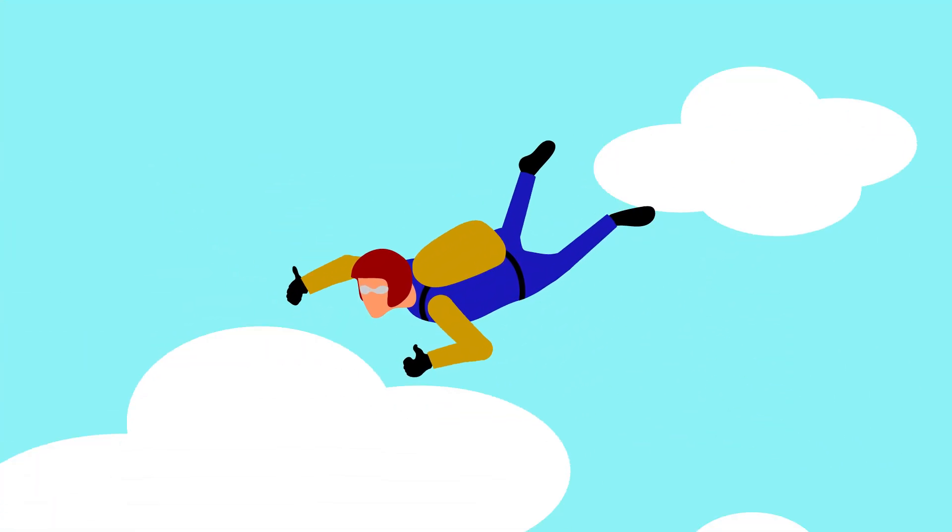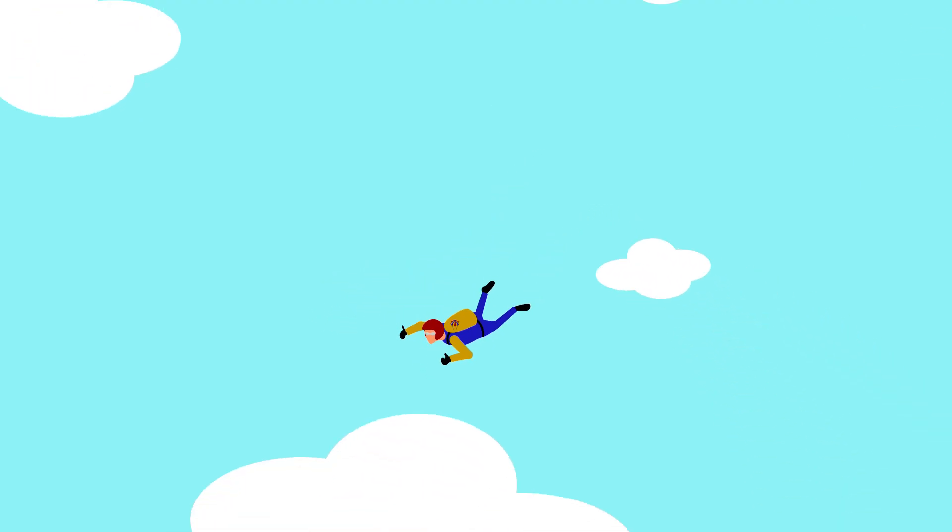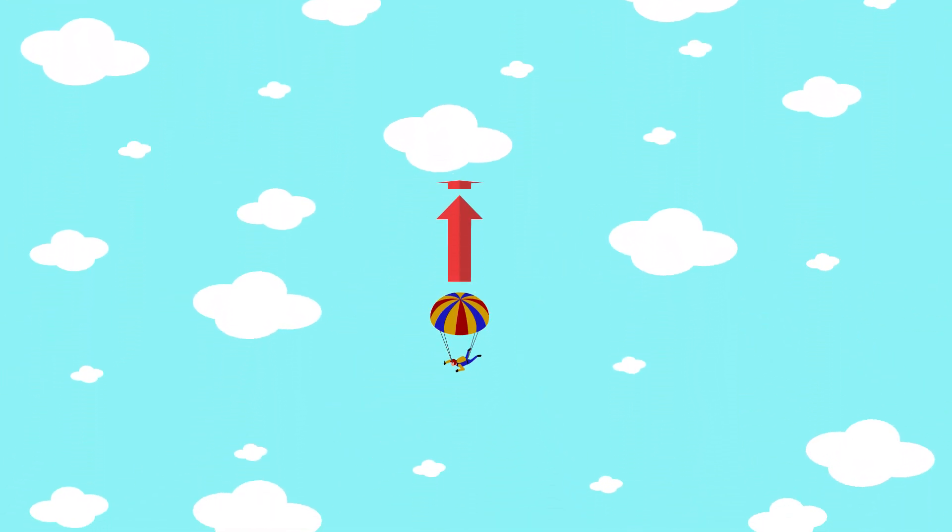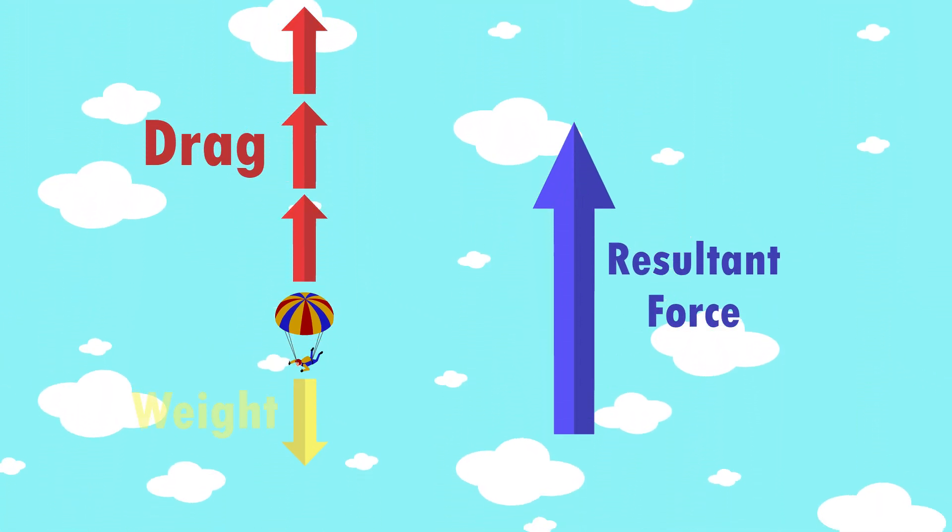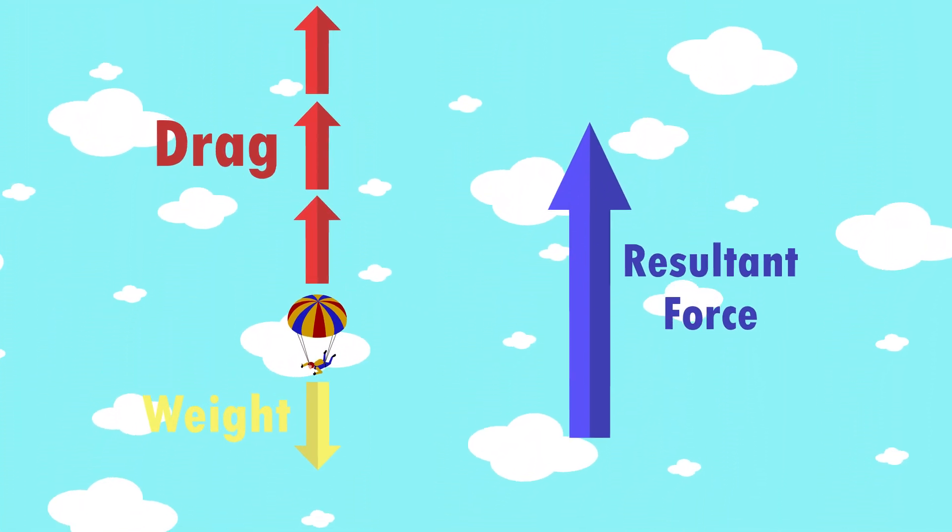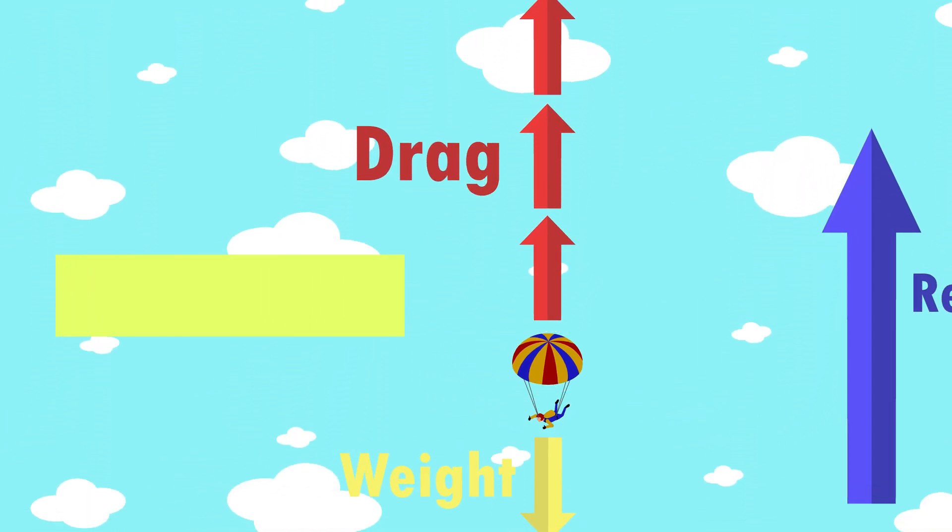So now the skydiver wants to slow down. They release their parachute and there is now a huge drag force upwards. So a resultant force upwards in the opposite direction to motion. This causes the skydiver to decelerate.